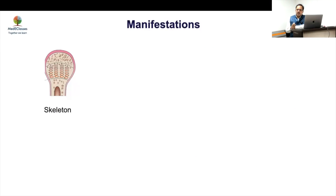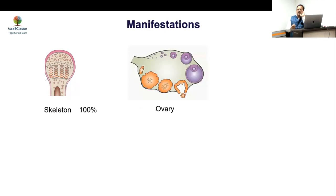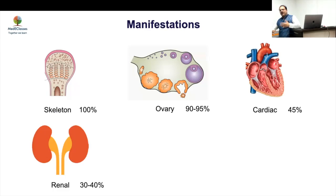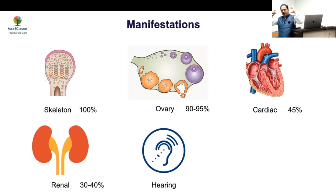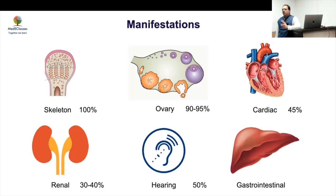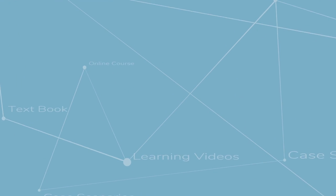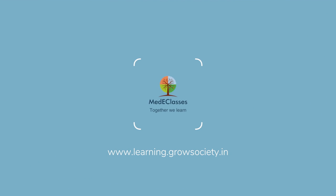Turner syndrome affects the skeleton in everyone — all girls will be short. Ovarian involvement occurs in a significant number of cases. Cardiac abnormalities are also very common. Renal abnormalities can occur due to fetal edema preventing normal kidney ascent, resulting in horseshoe kidney. Hearing problems arise from ear anatomy predisposing to infections, and later sensorineural hearing loss develops. Liver and intestinal function may also be affected in 30–40% of cases. Overall manifestations include skeletal, cardiac, ovarian, renal, hearing, and autoimmune abnormalities.